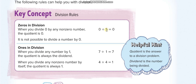For example, if you have 0 chocolates and want to divide them among 5 boys, each one gets 0. The second division rule is ones in division. Any number divided by 1 equals that same number — for example, 7 divided by 1 equals 7, because one person gets everything. Also, any number divided by itself equals 1.